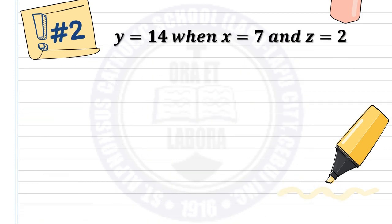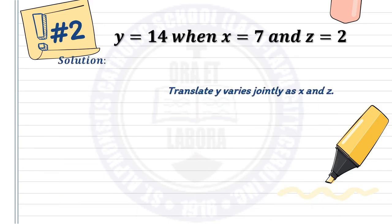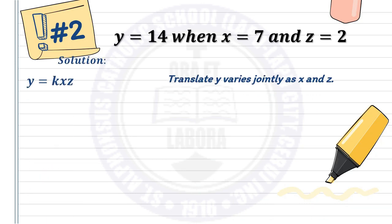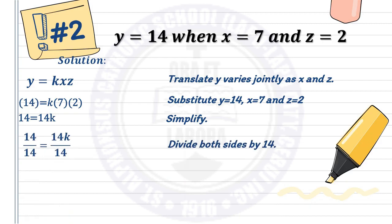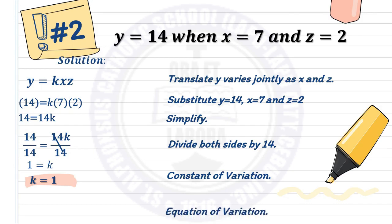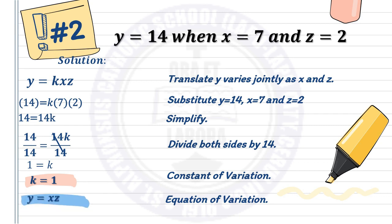Number two: y is 14 when x is 7 and z is 2. Translating gives y equals kxz. Substituting: 14 equals k times 7 times 2, so 14 equals 14k. Dividing both sides by 14 gives k equals 1. The constant of variation is 1. For the equation of variation, since k equals 1, you don't need to write the 1 — so the equation is simply y equals xz.